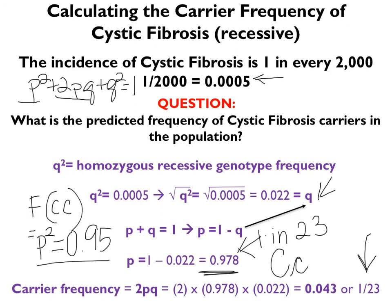I hope this was helpful in demonstrating one example of how you could apply, very simply, the Hardy-Weinberg equation to calculate allele and genotype frequencies for a given population. Bye-bye. Thank you.